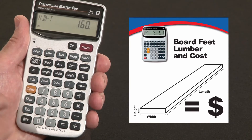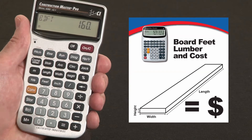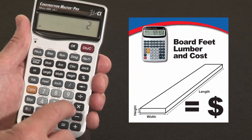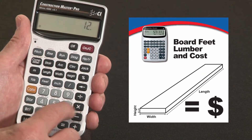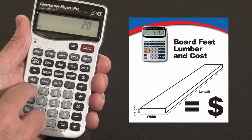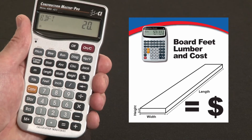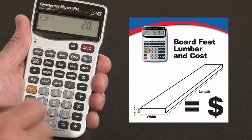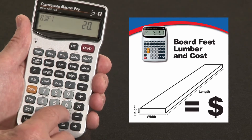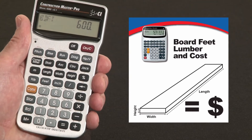Let's put that in the memory. And I need 30 pieces of 2x6x20. Enter 2x6x20, Convert, Board Feet. And now I can say I need 30 pieces of that: times 30 equals 600 board feet. Put that in the memory.